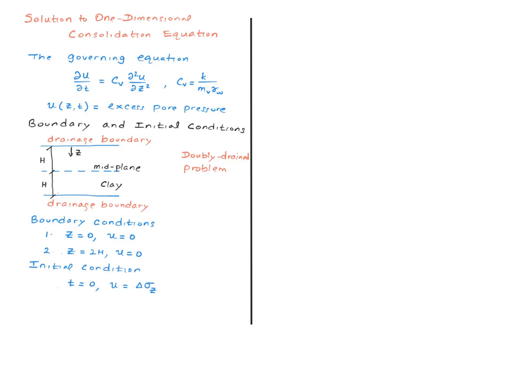A drainage boundary cannot hold the excess pore water pressure. So the excess pore water pressure will remain to be zero at these boundaries. So for this problem, z equals zero, u is zero, z equals two h, u is zero.